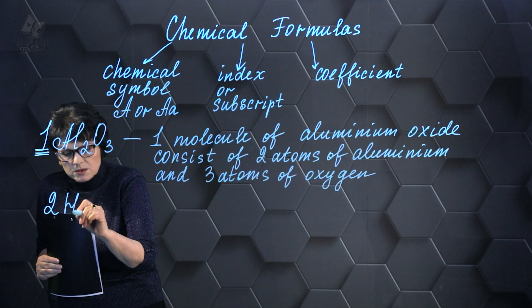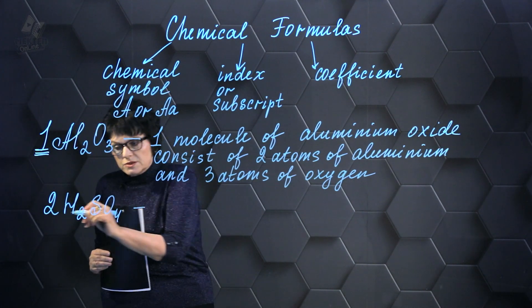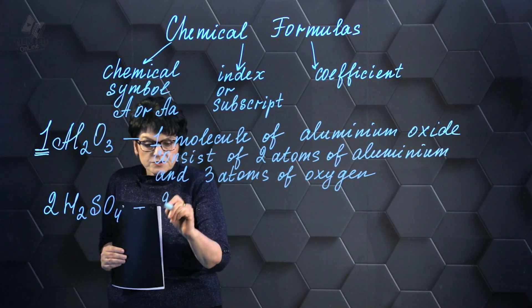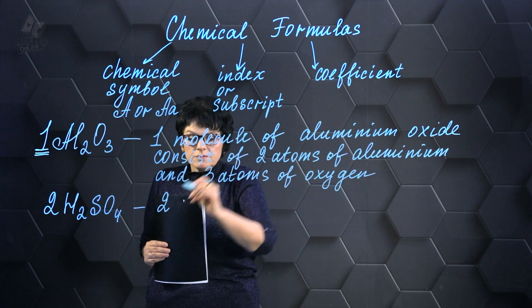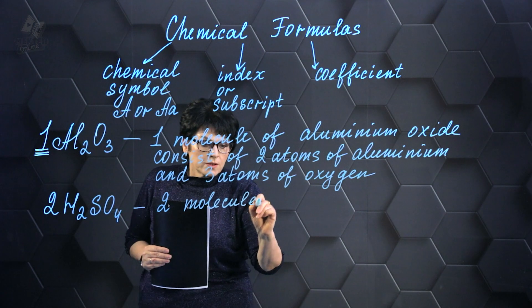Now let's bring up another example. If this is the formula for sulfuric acid, check it out. There's a coefficient of 2 in front of the formula. A coefficient of 2 means that in this case, it's 2 molecules.